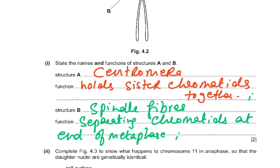To summarize: the centromere holds sister chromatids together, or you could also say it is the site of attachment of the spindle fibers. For structure B, the spindle fibers or microtubules are responsible for separating the chromatids and movement of the chromosomes to the opposite poles.